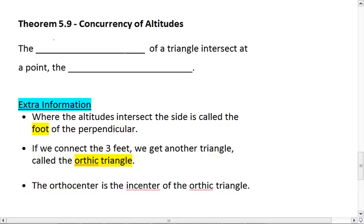What you need to know is that the altitudes of a triangle intersect at a point that is called the orthocenter. O-R-T-H-O-C-E-N-T-E-R. And that is theorem 5.9.